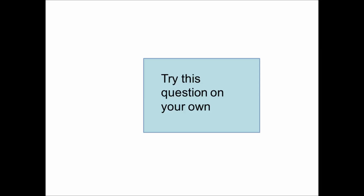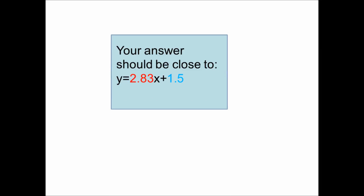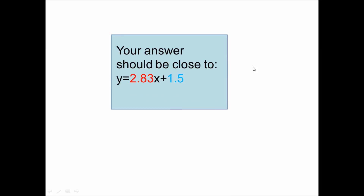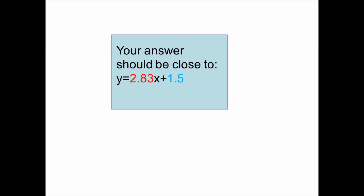Now that you've had a chance to try that on your own, your answer should be pretty close to y equals 2.83x plus 1.5. If you used the points that I did — 3 comma 10 and 9 comma 27 — this should be your answer. If you used your own line of best fit and your own points, it just needs to be pretty close to this. If you didn't get this, please follow along as we solve for it.